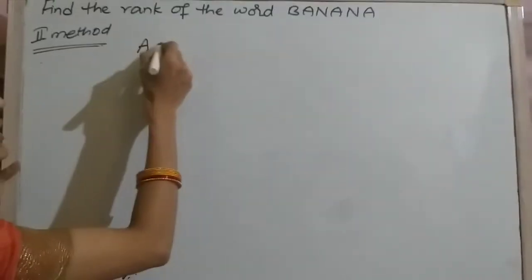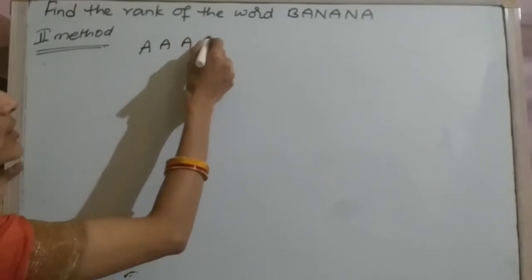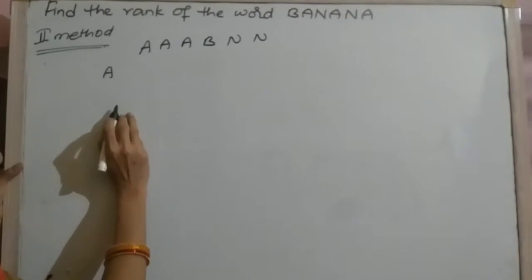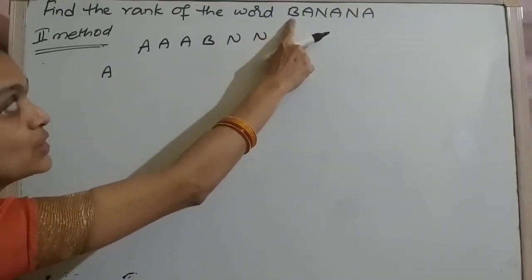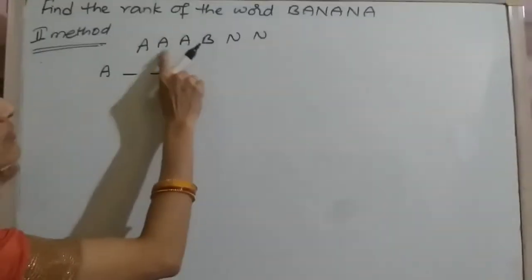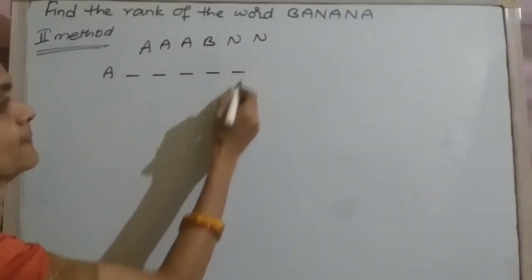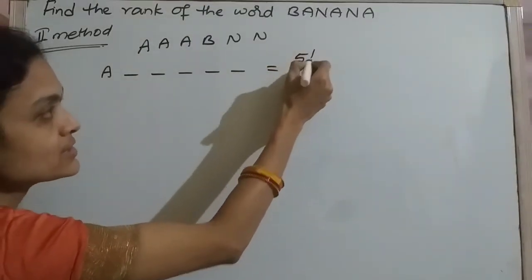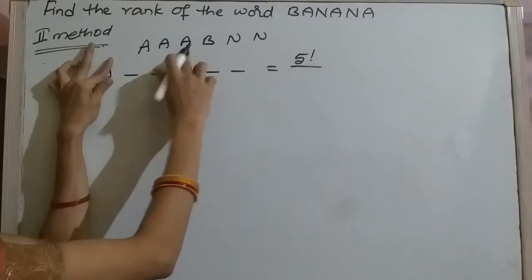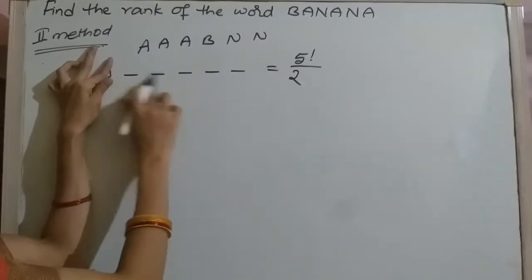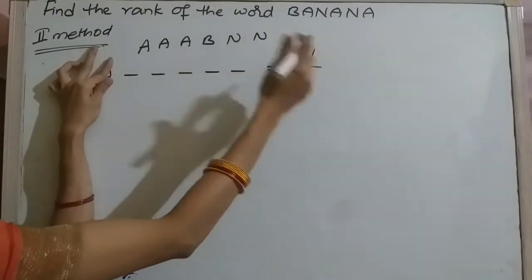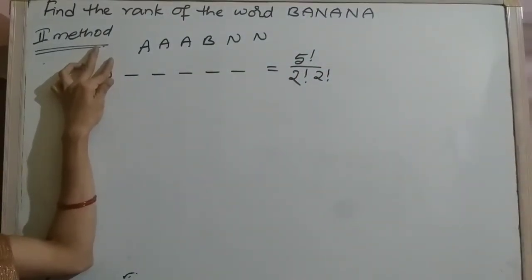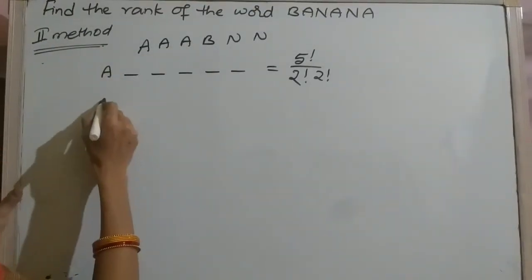In the second method, first write the letters of BANANA in alphabetical order: A, A, A, B, N, N. First, you want B to come before the word, so there are five gaps. These five letters can fill five gaps in 5! ways. Among these, two A's in 2! ways and two N's in 2! ways.